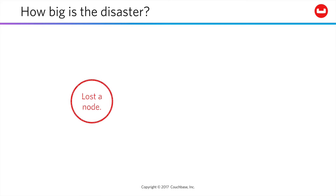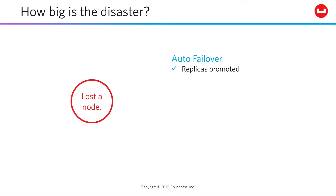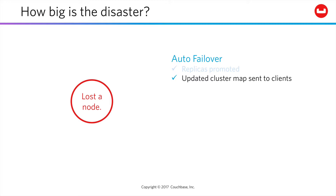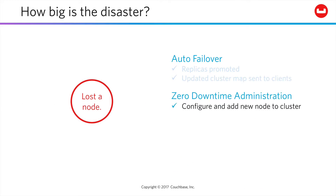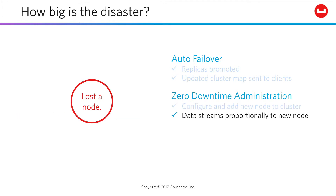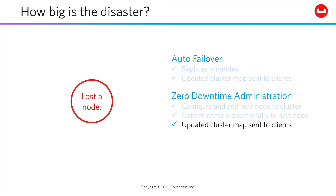Let's say you lost a node. On failover of this node — a process you can fully automate if you choose — your replicas are activated, and updated cluster maps are issued to all clients. You get a new node configured and added into the cluster, data is rebalanced across the cluster, and updated cluster maps go to all clients throughout. Your customer never knows anything happened. From their perspective, nothing did. Their data is continuously available.